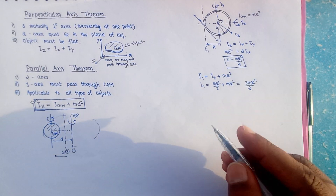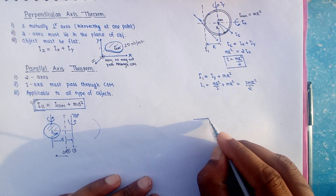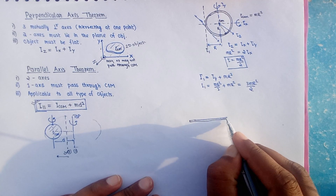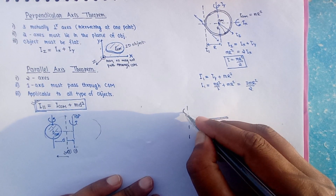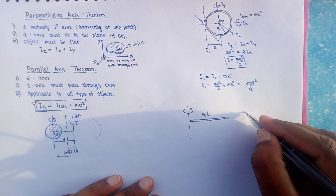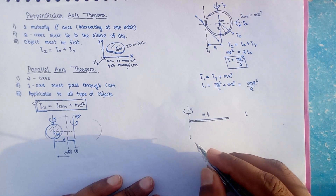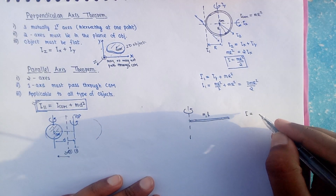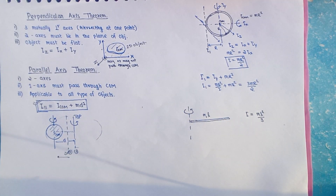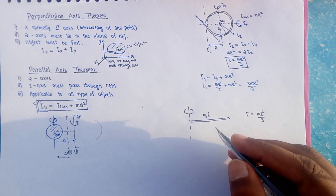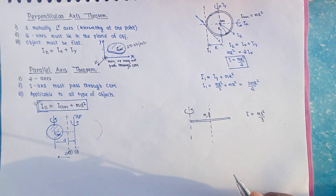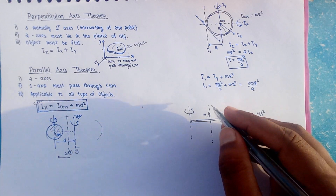Let's take one more example. Suppose this is a rod of mass M and length L. We know that its moment of inertia when rotating about one of its ends is M L squared divided by 3. Now I have to calculate the moment of inertia about its center of mass.